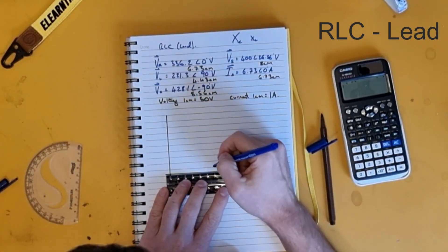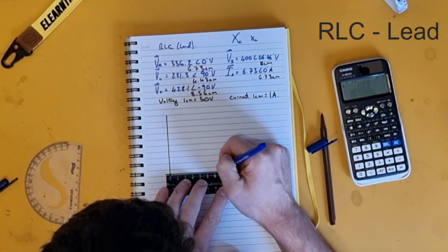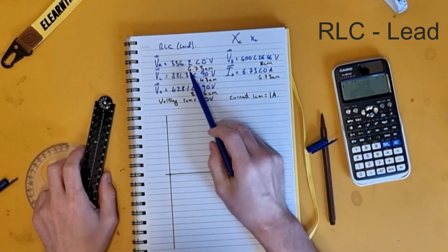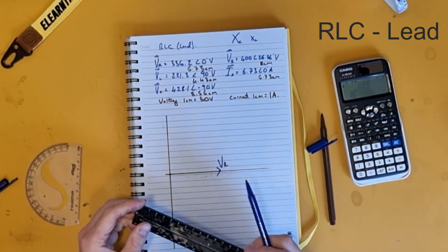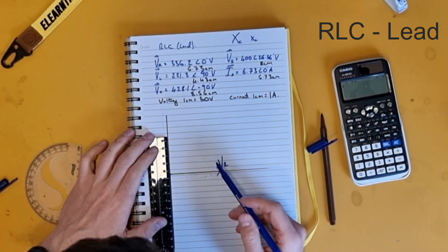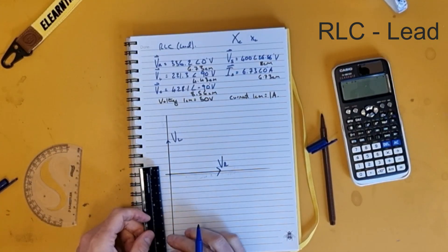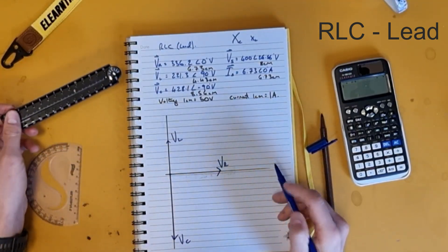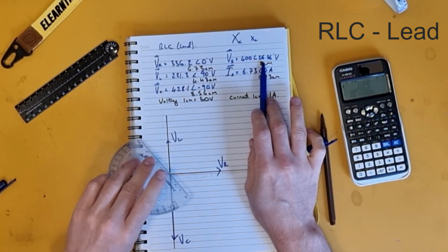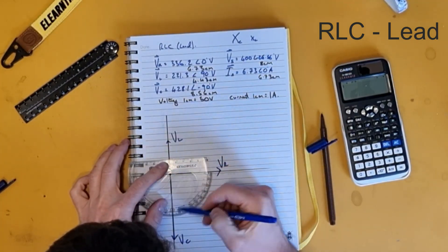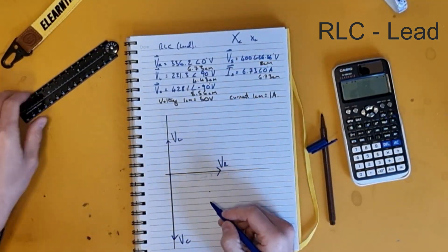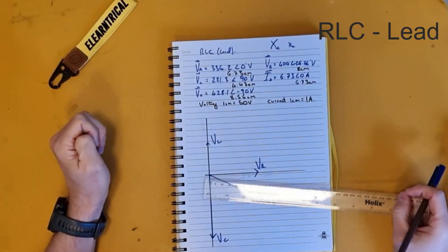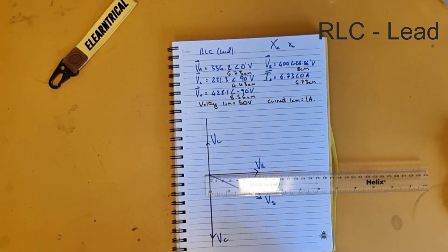So VR is 6.7 centimeters at zero degrees. VL is 4.43 centimeters at 90 degrees. VC is 8.6 centimeters at minus 90 degrees. And the supply voltage is 8 centimeters at minus 26.6 degrees — negative because it's a leading circuit.